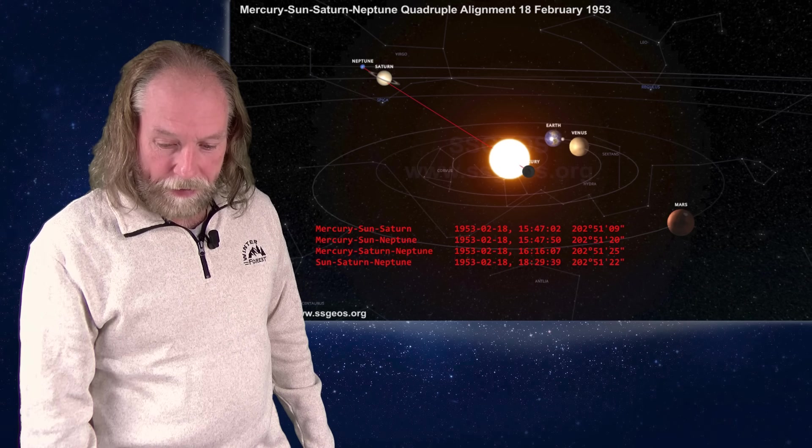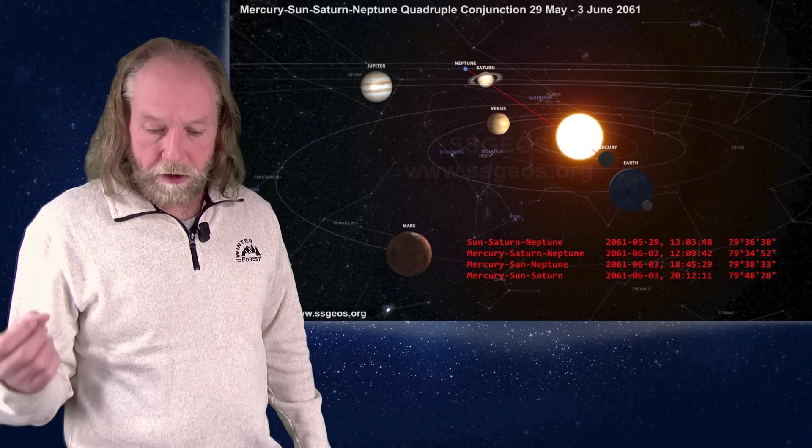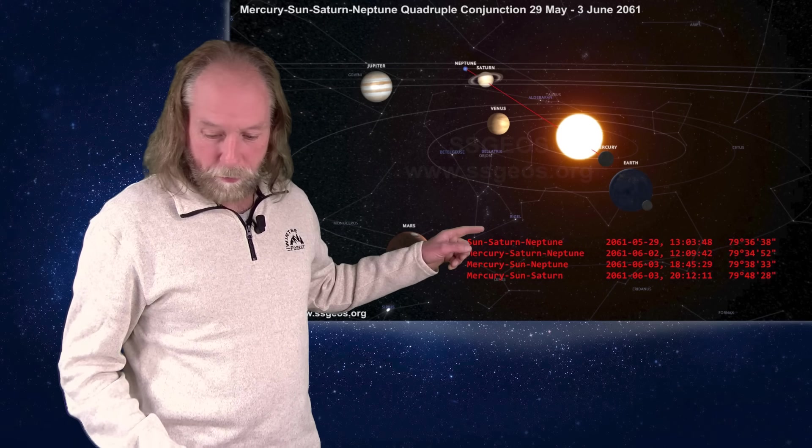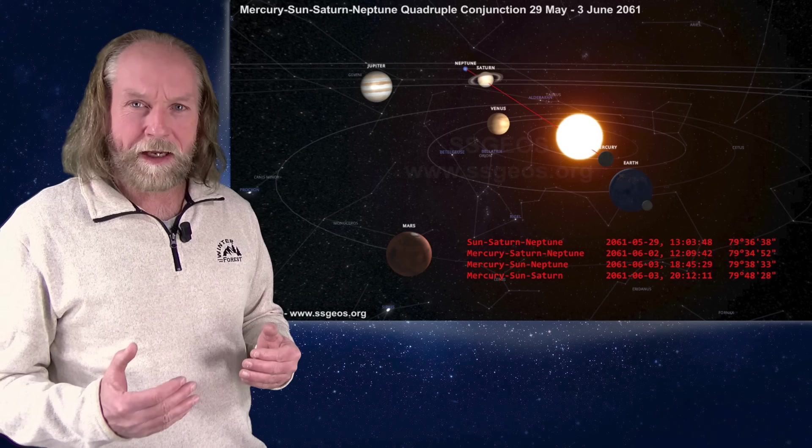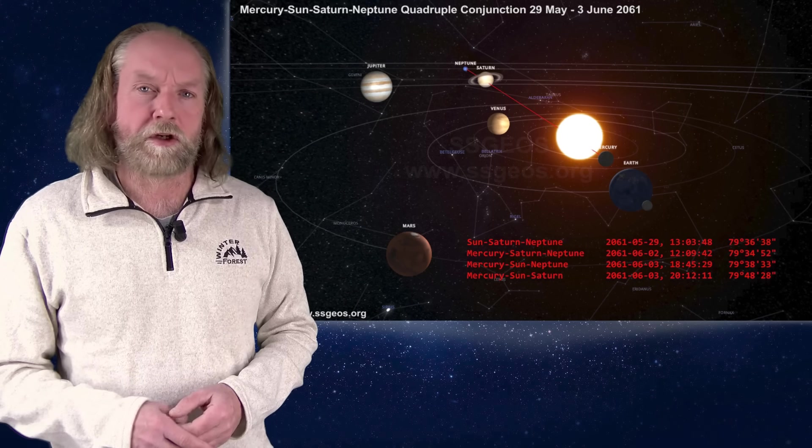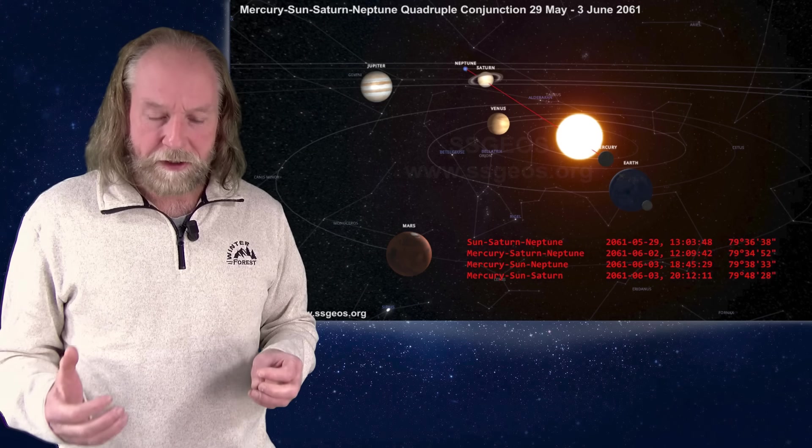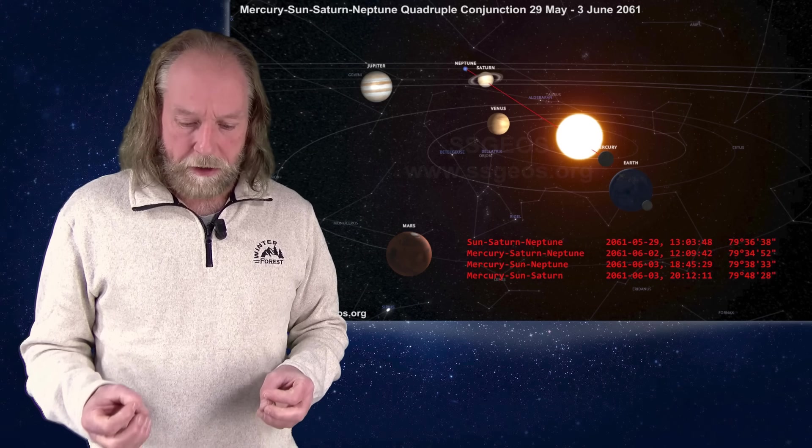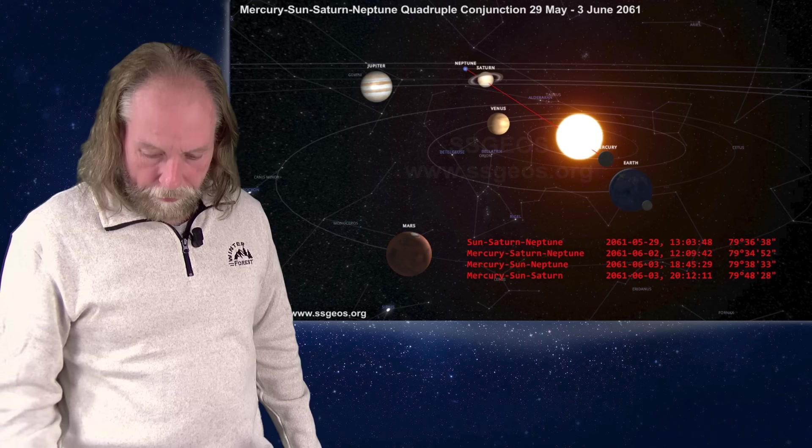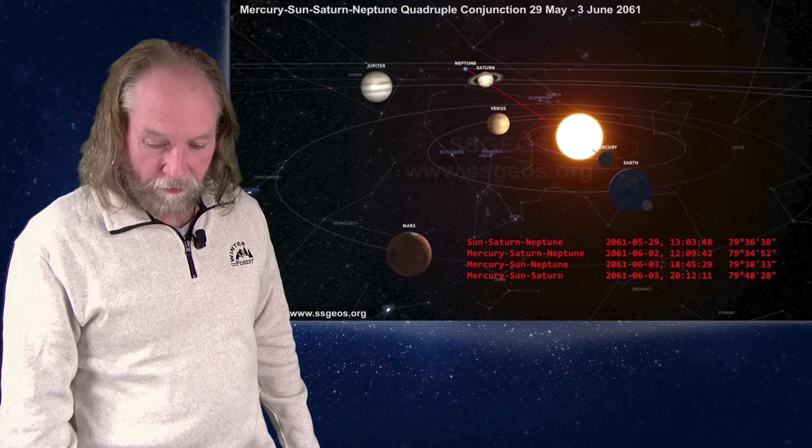And if we look at the future, the next grand conjunction will be around May-June 2061. And again, we see Mercury on the other side of the Sun. But it is a little bit off, a couple of days. So again, there it is fading. So apparently, from 1953 to 2025 approximately, this period of roughly 70 years, there is a very tight resonance with Mercury and the grand conjunction. But it doesn't stay. It is just very stable across these decades.